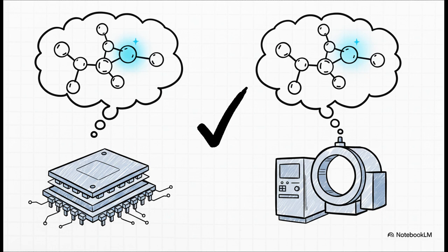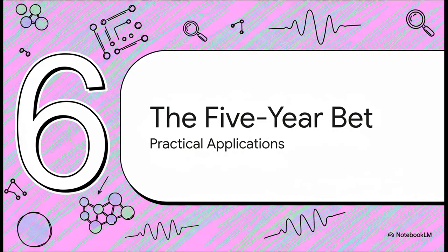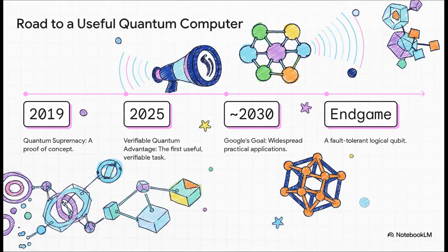But here's the kicker. The quantum computer saw details about those molecules that are literally invisible to our best current tools. So this isn't about replacing an old tool. It's about adding a whole new sense we never had before. This success has made Google so confident that they're actually putting a timeline on the future. They are betting that we are going to see practical, real-world uses for this technology within the next five years. So you can see this clear roadmap taking shape. We went from the 2019 proof of concept to today, the first genuinely useful application. The next major stop on the line is widespread practical use around 2030.